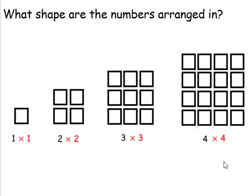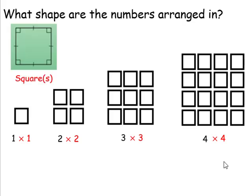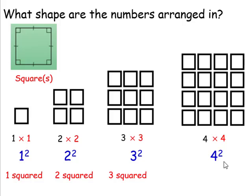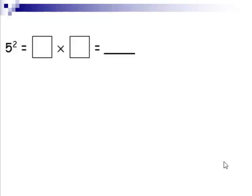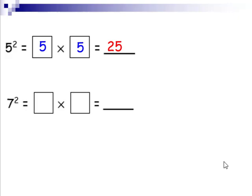What shape are the numbers arranged in? Yes, in squares. This is why we read this as 1 squared when we see that power, that exponent of 2. We would read this as 2 squared. We squared the 2. This one as 3 squared, and the next one as 4 squared. When we see 5 squared, this would mean 5 times 5, which is 25. On the next one, this is read as 7 squared. 7 times 7, which is 49.